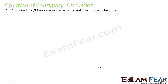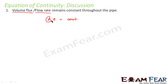Now let us look at the discussion on the equation of continuity. The first point: volume flux or flow rate remains constant throughout the pipe. Even whether the cross-sectional area is more or less, the velocity of the fluid changes accordingly. If the cross-sectional area is more, velocity will reduce; if the cross-sectional area is less, velocity will increase. But their product always remains the same, so the volume covered at any cross-sectional area remains constant throughout the pipe.